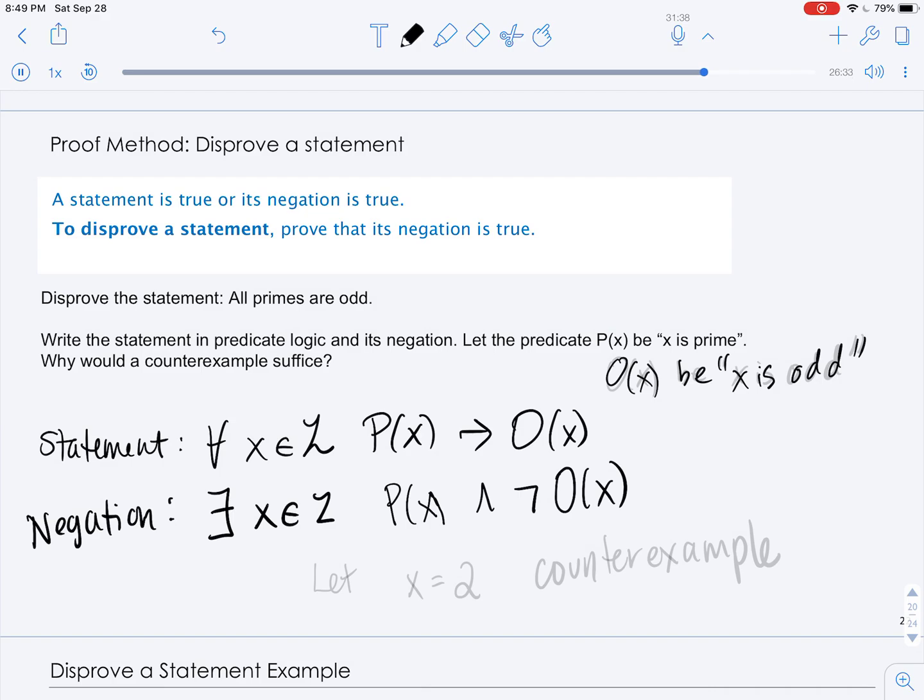And in order to disprove the original statement, we only need to give that integer, and that integer that is prime and even is 2. So that is called a counterexample.